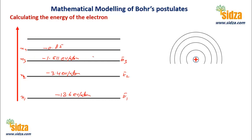As you go away from the nucleus, what do we observe? Negative 3.4 is higher than negative 13.6, so the second energy level is higher than the first. The first shell has the lowest energy. As you move away from the nucleus, the energy of the different orbits keeps on increasing. As n increases, energy also increases.